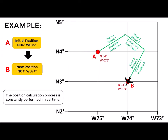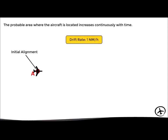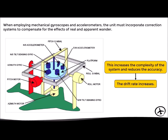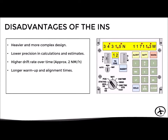Today's inertial navigation is not perfect. It has certain errors that reduce accuracy over time, known as drift — measurement errors that accumulate, making position estimations less accurate. For example, a drift rate of one mile per hour means that after one hour of flight, the estimated position will be within one mile of the actual position. The disadvantages of INS include: heavy and complex design due to mechanical sensors, lower precision in calculations, high drift rate, longer warm-up and alignment times, requirement for manual entry of initial position, and a more complex control panel.